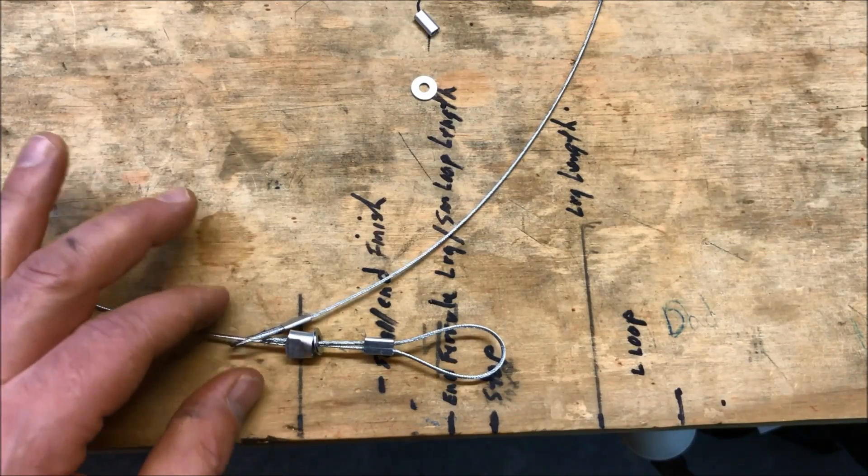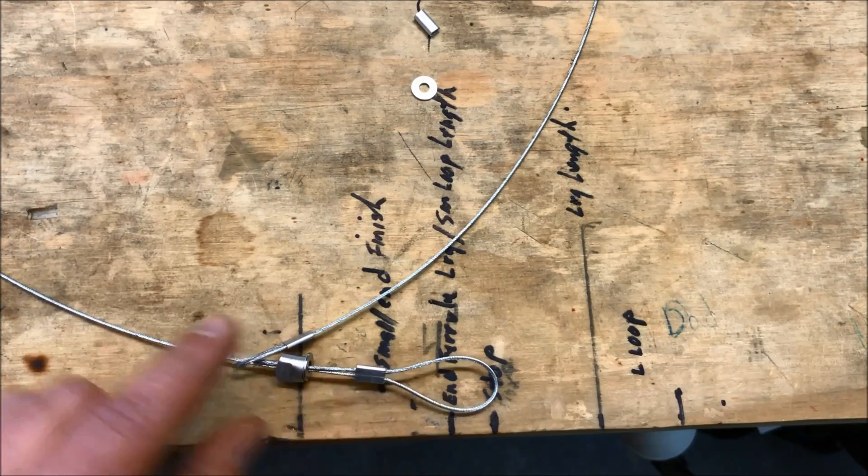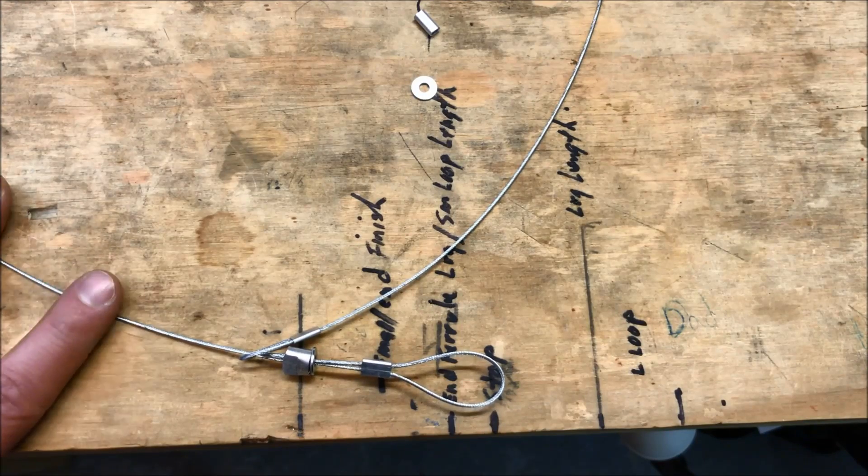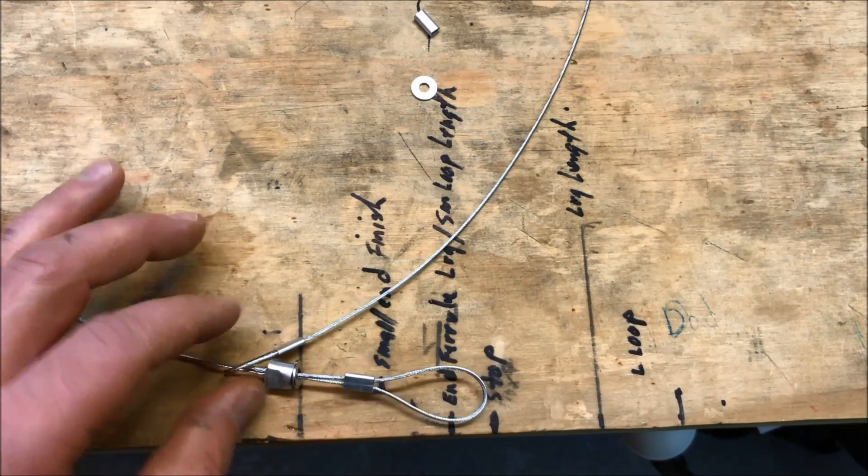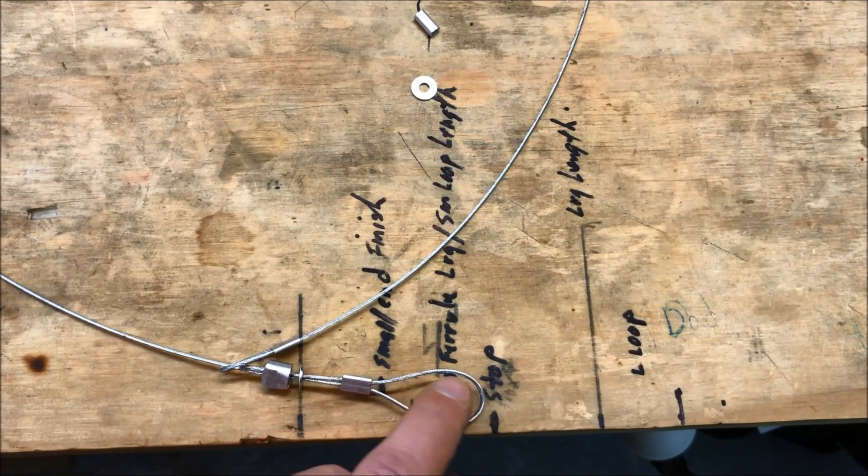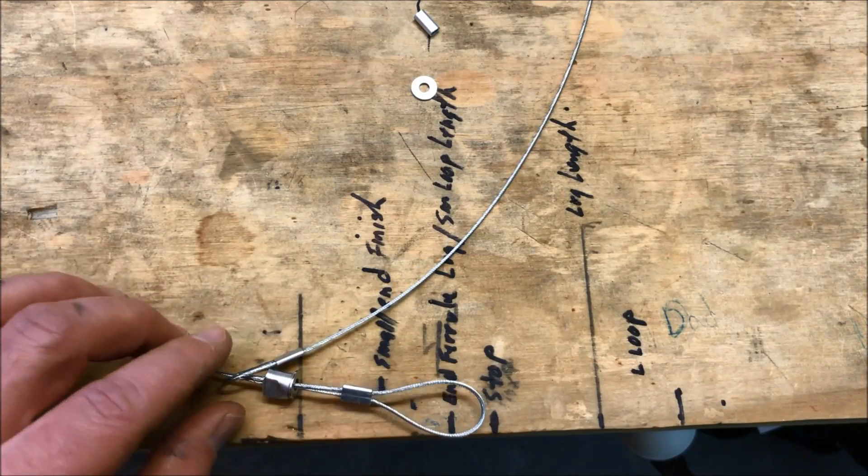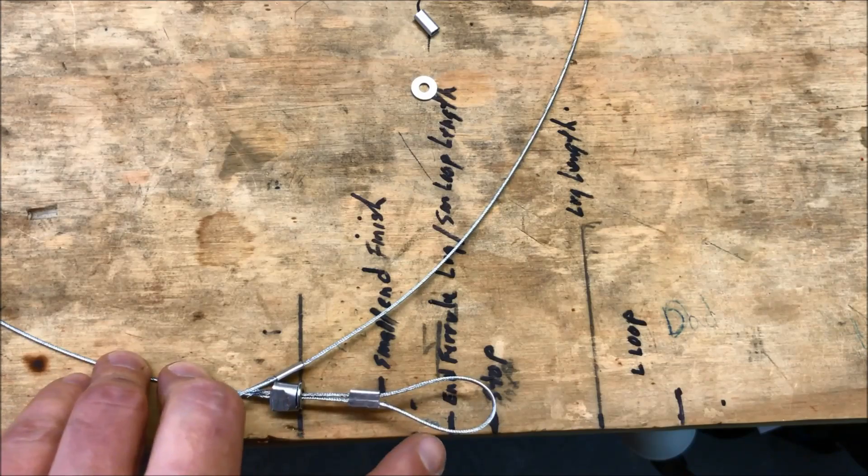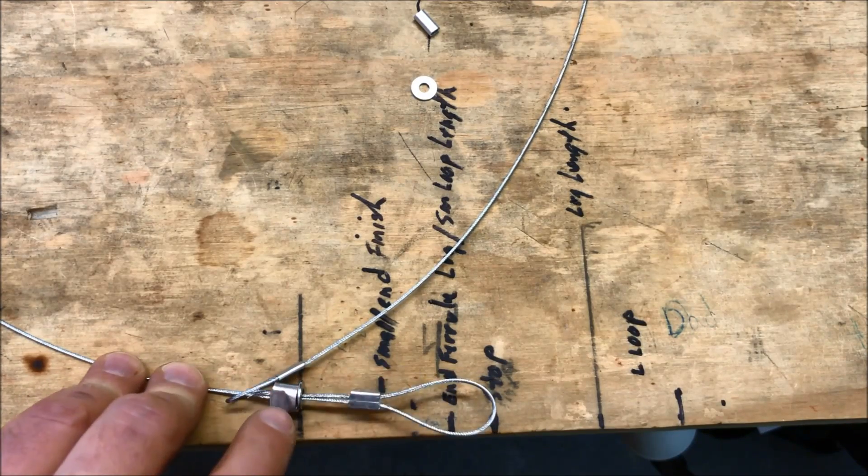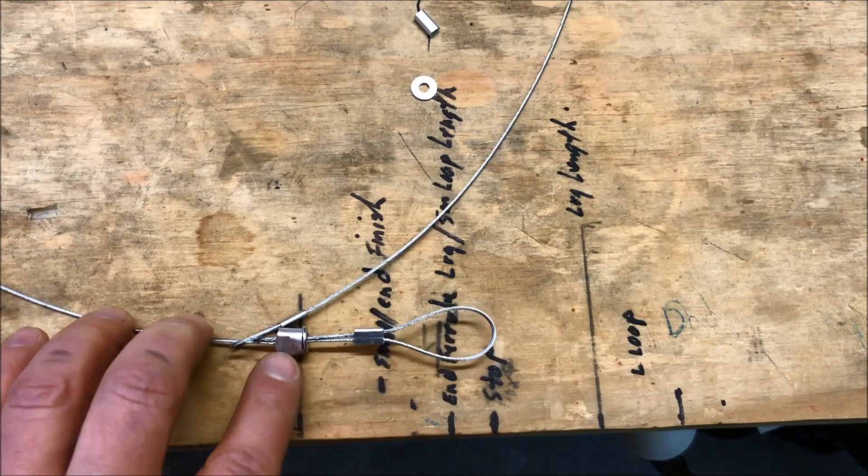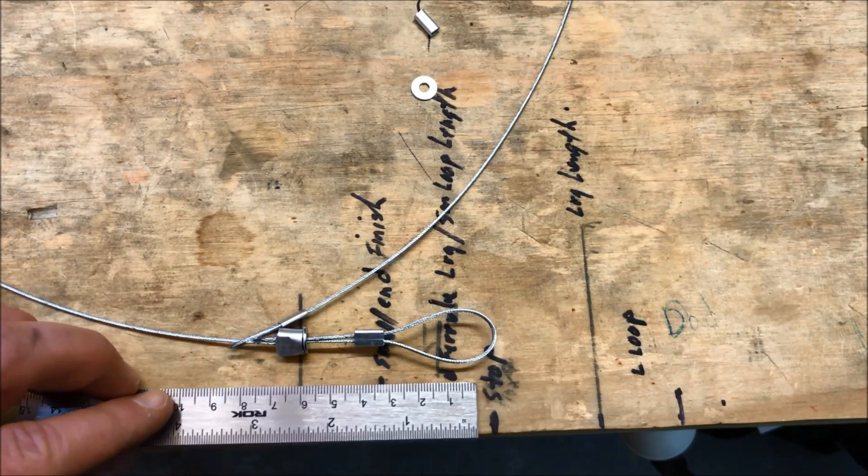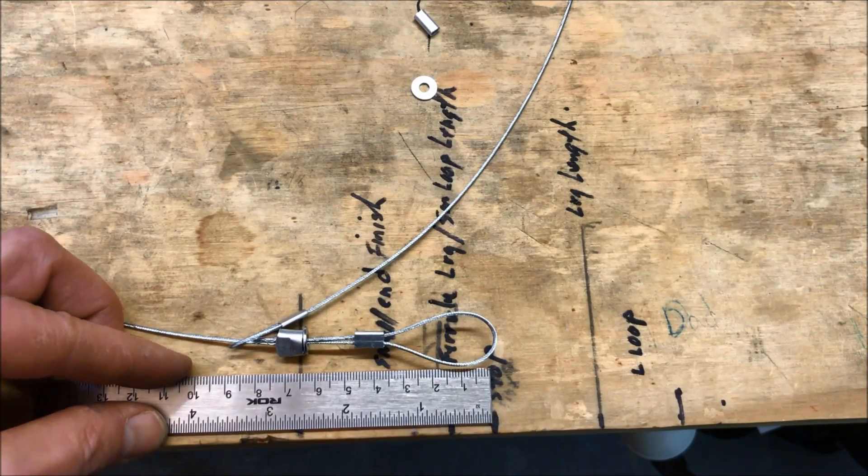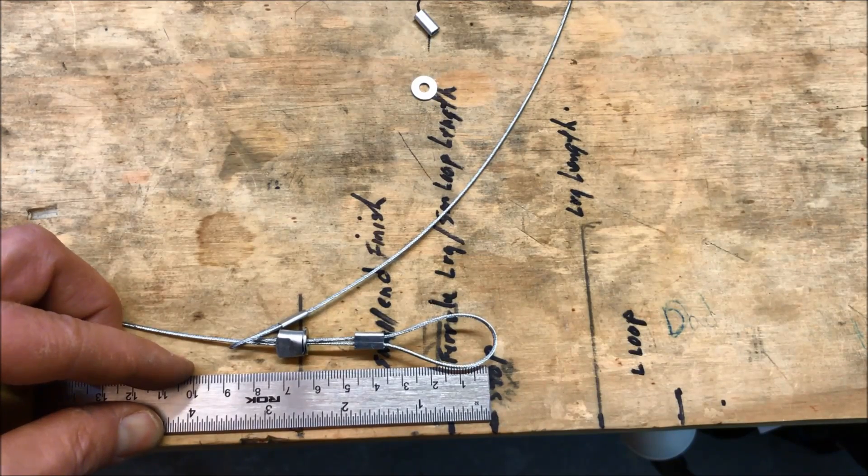So right now we're in the process of making the larger loop. We already accomplished this smaller loop. This is a finished snare that I already have made, I'm just using it for an example. So you'll see over here this is the end where the lap link goes through. And I'm just measuring the stop. So from the end where the lap link goes to over here is where you have the stop. And this measures give or take two and a half inches.